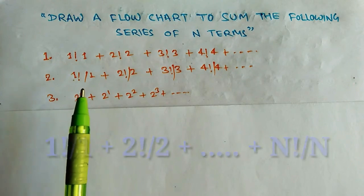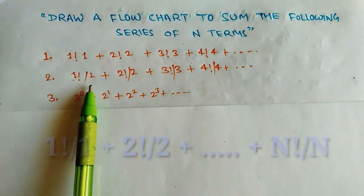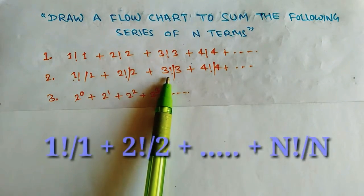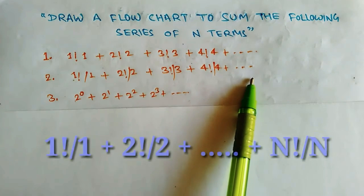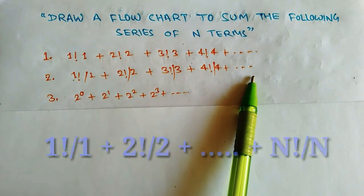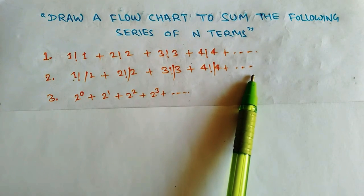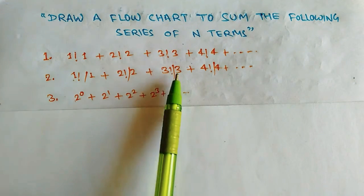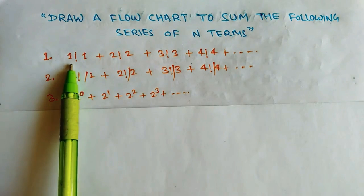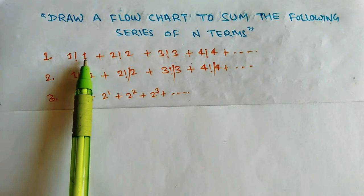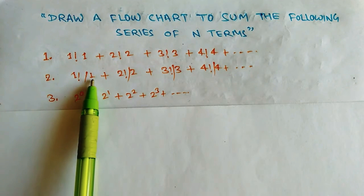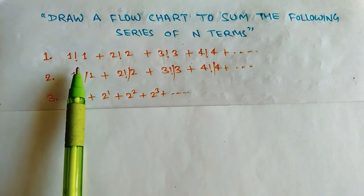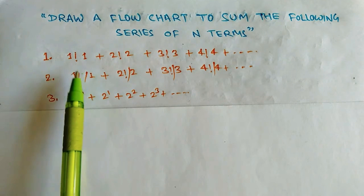The second series is 1 factorial divided by 1, plus 2 factorial divided by 2, plus 3 factorial divided by 3, and so on. The last term will be n factorial divided by n. You can see what is common in the first and second series — the factorial term is common, and the multiplying or division factor is also common. There is only one operator difference between the two questions.